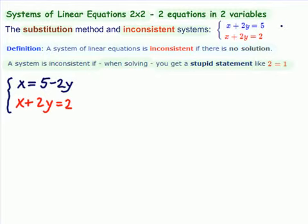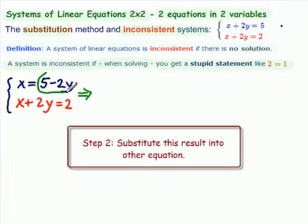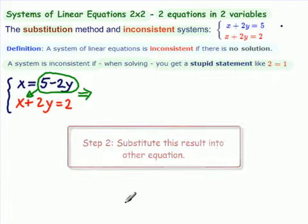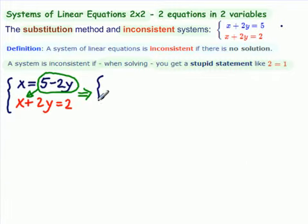We're just continuing on. We have no idea whether the system is consistent, has a solution, inconsistent, has no solutions. We're just solving normally. So, what do we do next? We take this expression that we got for the variable x, and we substitute it into the other equation. So, now the top equation becomes our dragger equation. We're just dragging it along. In the bottom equation, we substitute 5 minus 2y.